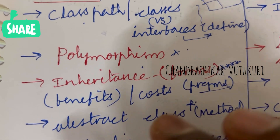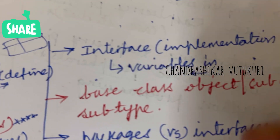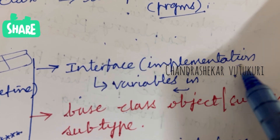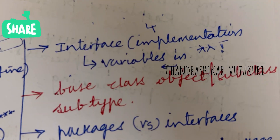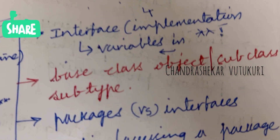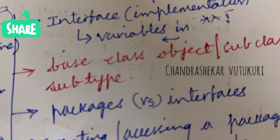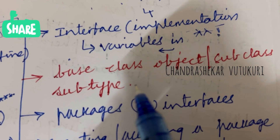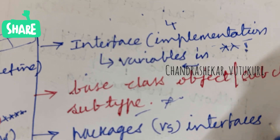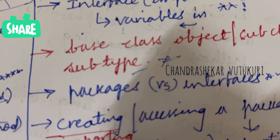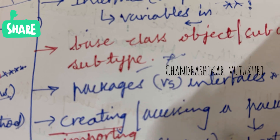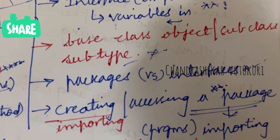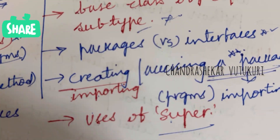I can expect polymorphism as well as inheritance and their benefits for you all this time. Coming to the fourth question, interface is also set as the topmost question, and variables in interface and their implementation is set as the topmost question which may occur in 4A and 4B. Do not expect a direct 10-mark proof, as the course is still lengthy. Base class object and subclass subtype is set as the short question. Packages versus interfaces may be the long question, and creating, importing, and accessing related to packages — you are going to get a sure question. Programs related to packages may also appear in 4A and 4B. Uses of 'super' may be the short question.